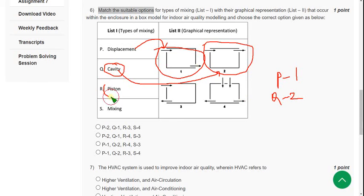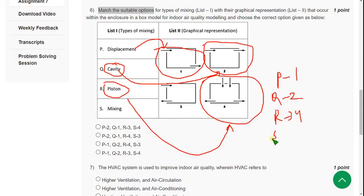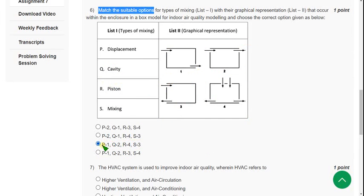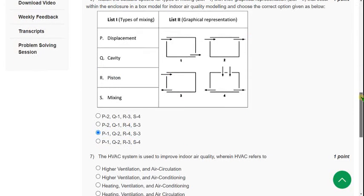And piston. Piston goes to fourth one. That means R goes to 4. And remaining S goes to 3. So 1, 2, 4, 3. The option is third one. So mark third option, third option as correct answer. Moving on to the seventh question.